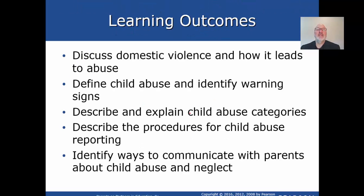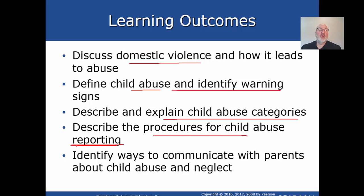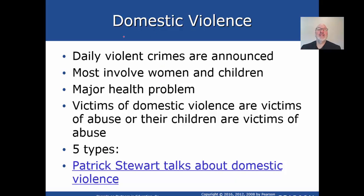Here are the objectives: discuss domestic violence and how it leads to abuse, define abuse and identify warning signs, describe and explain abuse categories, and describe procedures for child abuse reporting — probably the most important part. If you sense any kind of abuse in any category, you immediately get other people involved. Start with the principal and counselor and ask for support. This is above your pay grade. Also identify ways to communicate with parents about child abuse and neglect.